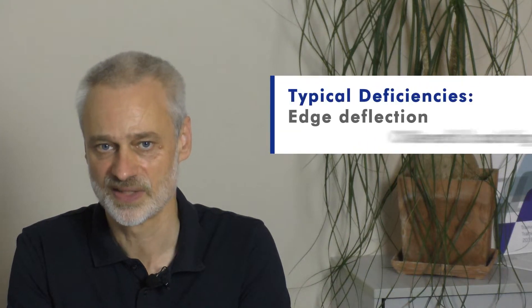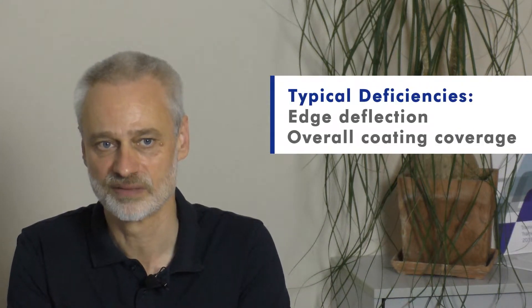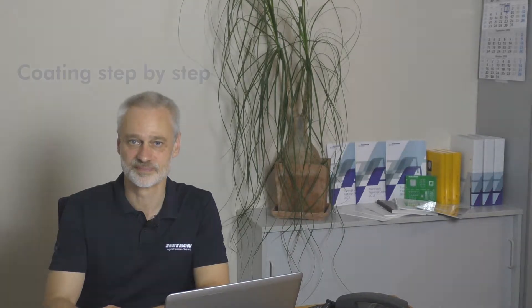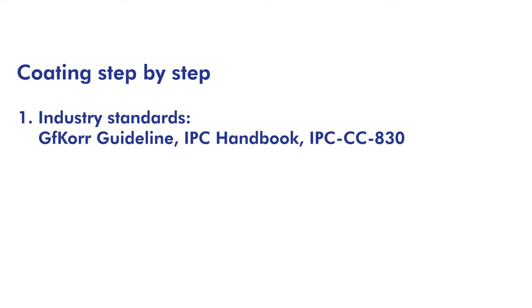There are some points you should be aware of when it comes to coating. For example, edge deflection and the overall coating coverage are typical deficiencies resulting from the coating process. The challenge is how to avoid such issues. The guideline of the Society of Corrosion Protection, the IPC Handbook, and the CC Standard 830 provide assistance on how to comprehensively coat.